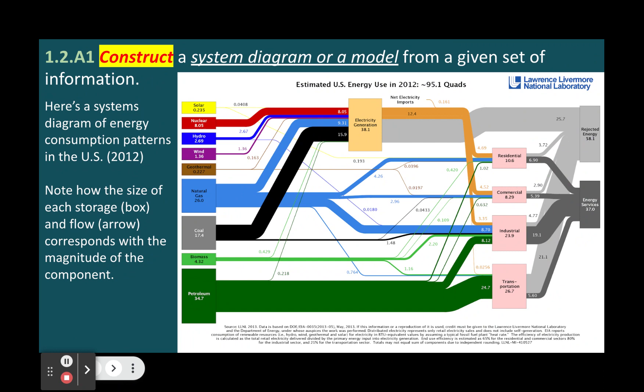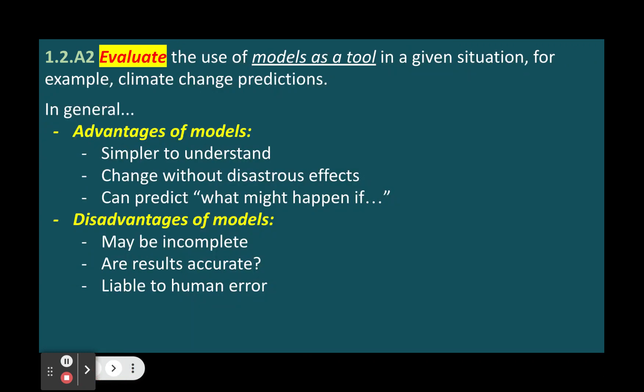Therefore, these models need to be constantly updated and validated with new data and observations and they should not be taken as absolute truths or certainties. Models in general are simpler to understand. You can change them without disastrous effects because you're not actually changing the real world or natural systems. And you can use them to predict hypothetical scenarios, what might happen if, et cetera.